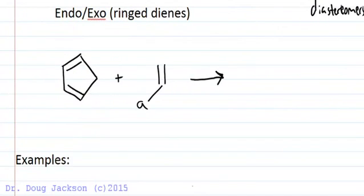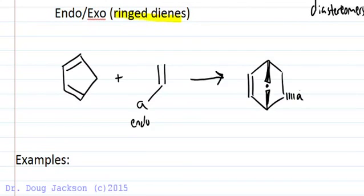Stereochemistry is also important if we have a ringed diene, because now endo and exo becomes very important. So we want to be pointed towards rather than away from the diene through reasons that we won't get into for this particular video. And when we do that, if we show this as a planar structure, we would end up with, from a bottom approach, this structure.